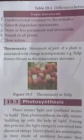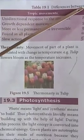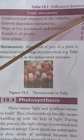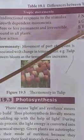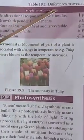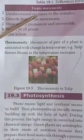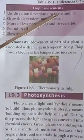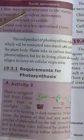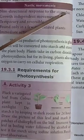Last, we will talk about the differences between trophic and nastic movements. Trophic movements are a uni-directional response to the stimulus. Nastic movements are a non-directional response to the stimulus.